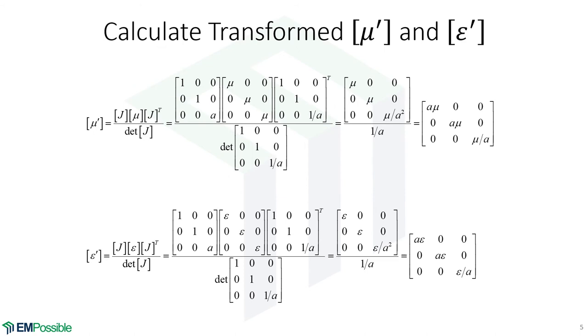We now transform our permeability and permittivity. And these are the equations we're using to do that. So we have our Jacobian. We have the transpose of the Jacobian. Since our Jacobian is a diagonal matrix, in fact, the Jacobian equals the transpose of the Jacobian. We have no terms in the off diagonals. So actually, we have all diagonal matrices here.